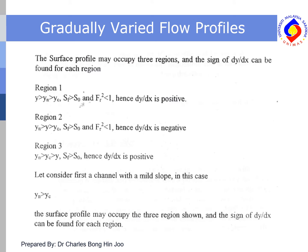Before solving gradually varied flow, we need to know the classification of the slope and the flow profile. The surface profile may occupy three different regions, and the sign of dy/dx can be found for each region. For Region 1, the flow depth is higher than the normal depth, and the normal depth is higher than the critical depth. The energy line slope is larger than the bottom channel slope and the Froude number squared is less than 1, so dy/dx is positive.